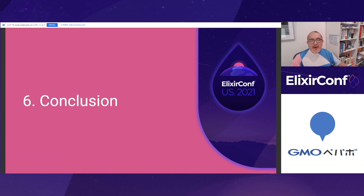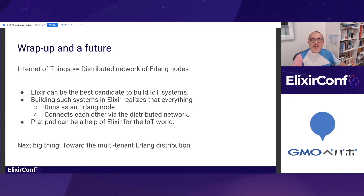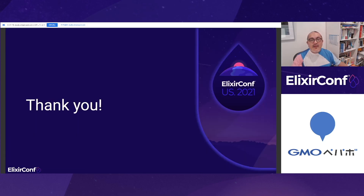It's time to wrap up. I think the Internet of Things can be realized well by the distributed network of Erlang nodes. As we saw in this talk, Elixir can implement all the layers of IoT systems, and it can keep the network secure even if we adopt the distributed Erlang protocol. I'd like to see a world where all things connect to each other as Erlang nodes, and I hope Platypad can be of help. I'm now wondering if we can provide the distributed Erlang network in a multi-tenant manner — I'd like to talk about that at the next stage. Thank you for listening to my talk.